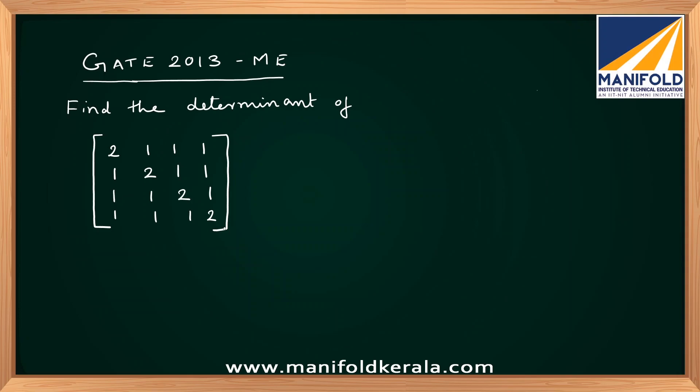This is a special matrix. You can see that only the diagonal elements differ from all other elements — all other elements are 1, and the diagonal elements are all the same.